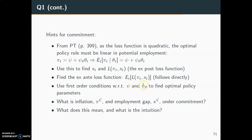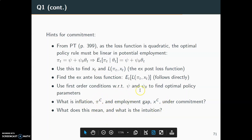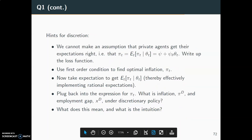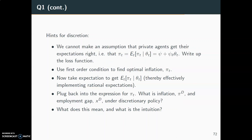Having found these parameters, you should be able to tell what inflation under commitment is in each period and what the employment gap x_c is under commitment. When you have found π, you also know the expectations and can plug that into the expression for x. Finally, interpret the intuition behind the commitment inflation and commitment employment level. For discretion, you follow a similar approach but not the exact same thing, because when authorities follow discretionary monetary policy, we cannot assume that private agents get expectations right in each period.